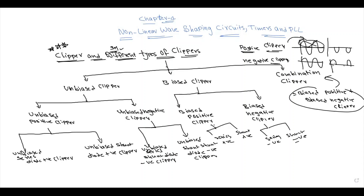A biased clipper allows adjustment of the clipping level on either the positive or negative side. A combination clipper is a combination of two clippers working together.